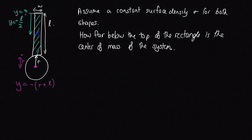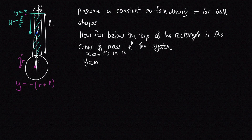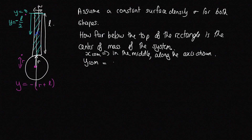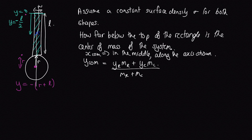The x-coordinate is trivial because both shapes are perfectly symmetric, so the centre of mass lies along the central axis. For the y-coordinate, we treat this as two discrete objects with their masses concentrated at their individual centres of mass. The formula is: Y_cm = (Y_rectangle × M_rectangle + Y_circle × M_circle) / (M_rectangle + M_circle), where the denominator is just the total mass of the shape.